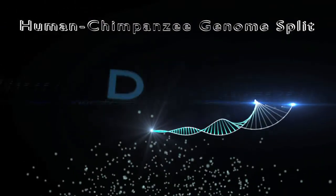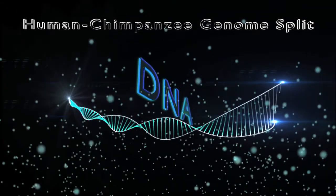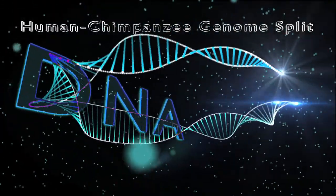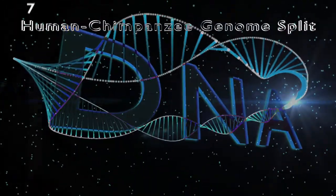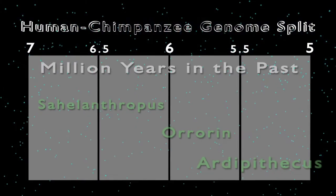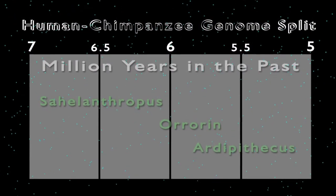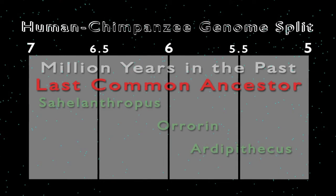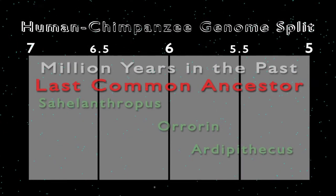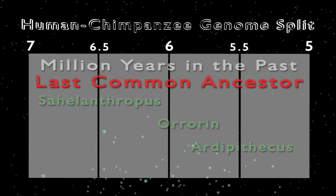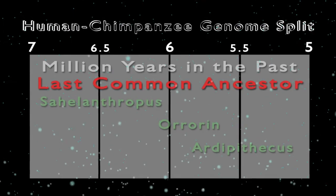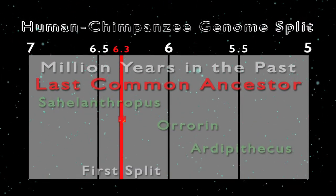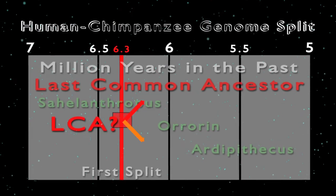Ardipithecus kadabba is an important ancient ancestor because it appears in the time frame of the human-chimpanzee genome split. Somewhere between 7 million years ago and 5 million years ago, we would find the last common ancestor of the chimpanzee line and the line of our human ancestor. Recent genetic research points to the genome split between chimpanzee and our human ancestor occurring around 6.3 million years ago.